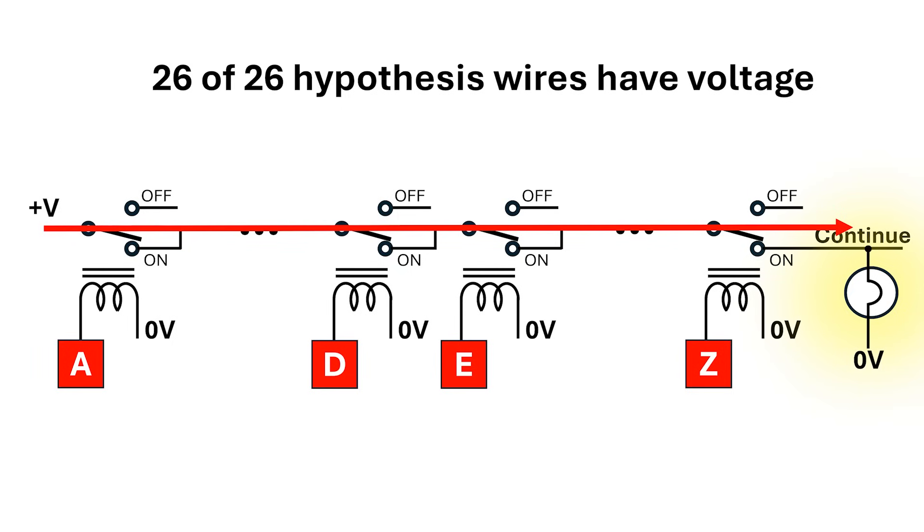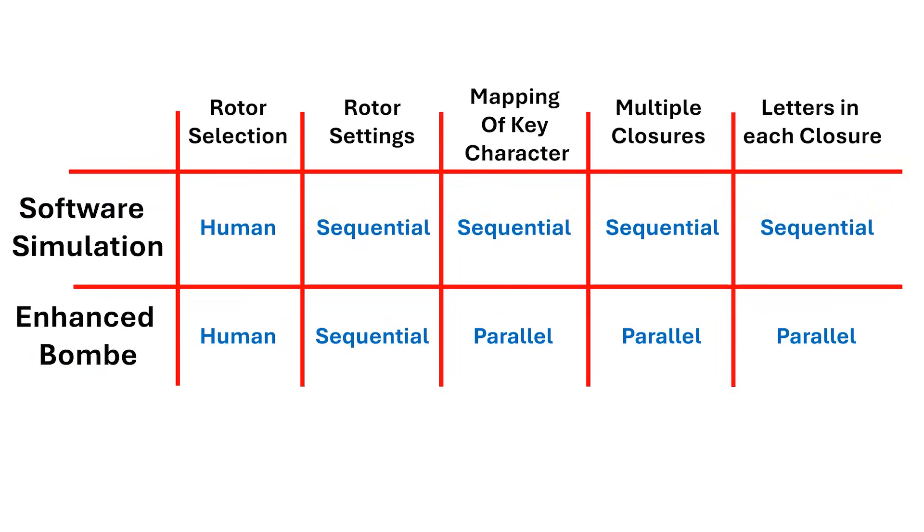There's a bit more to it, because the machine couldn't stop on a dime, but in principle this is how it worked. All possible 26 hypothesis wires were effectively tested in parallel, and this is how the machine searched for the plugboard mapping for the key character. Very clever.